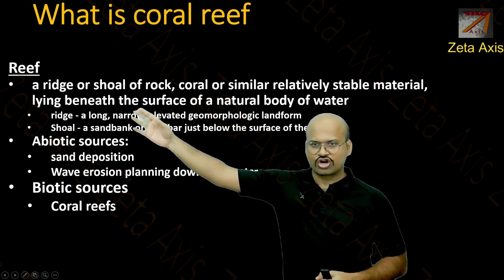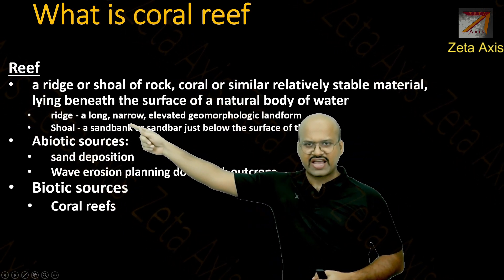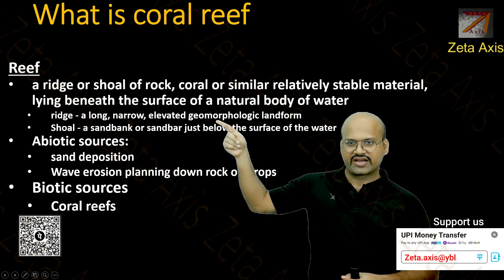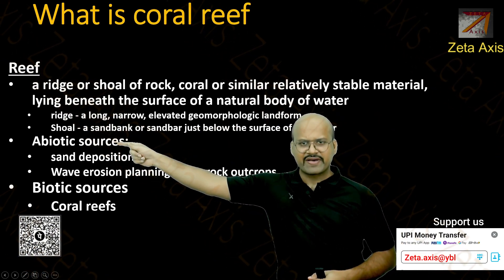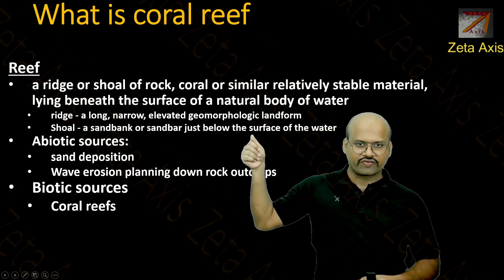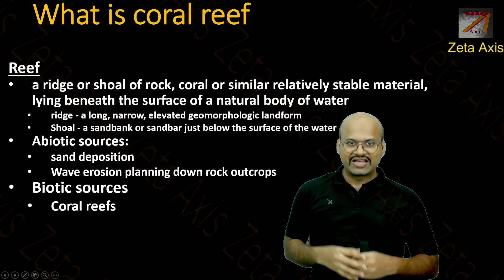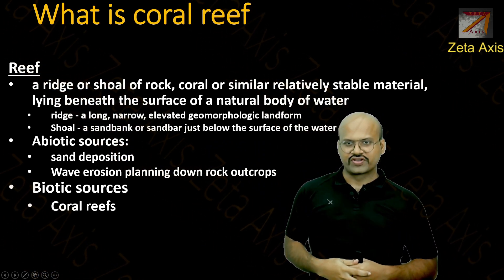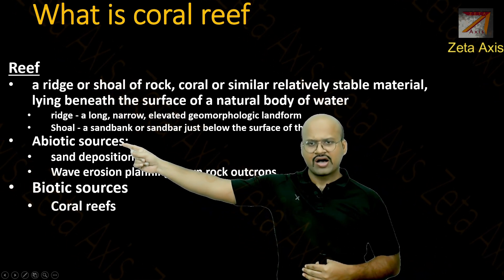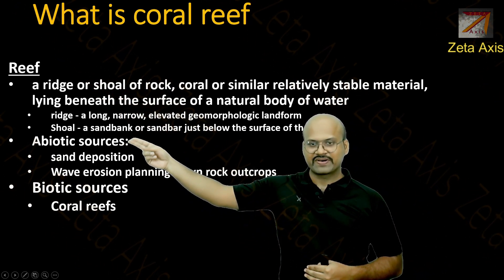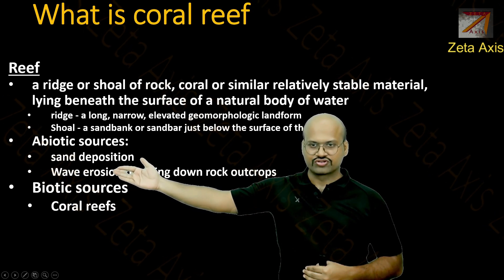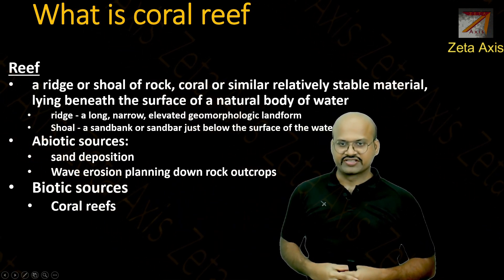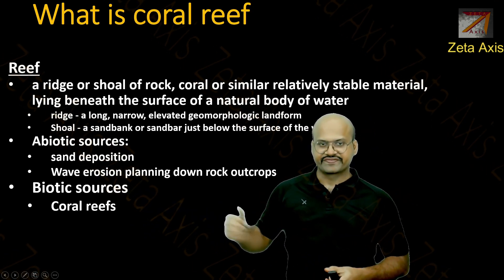A reef can be a ridge or a shoal. A ridge is a long narrow elevated geomorphic landform, while a shoal is a sandbank or sandbar just below the surface of the water. These are elevated structures within the sea. A reef can be created by abiotic sources like sand deposition or wave erosion, or by biotic sources — that is, by living organisms — and an example of the latter is coral reefs.